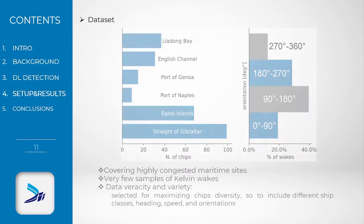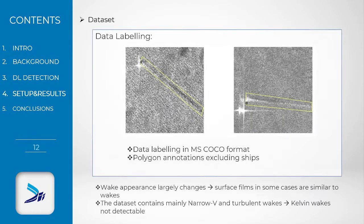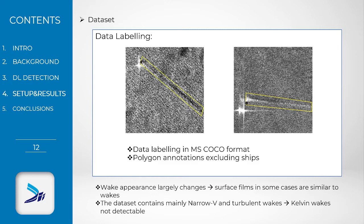Data labeling followed the Microsoft COCO format. The polygonal annotation purposely excludes ships to remove their influence on the detection. It is worth noting that the dataset does not contain examples of Kelvin wakes, and therefore these are not detectable.